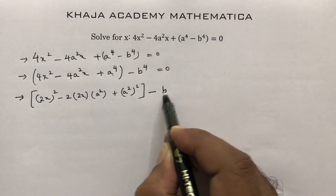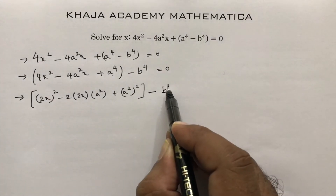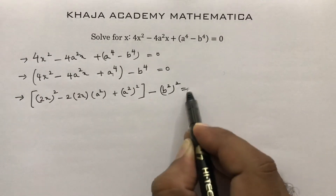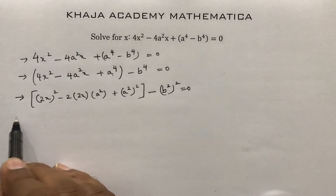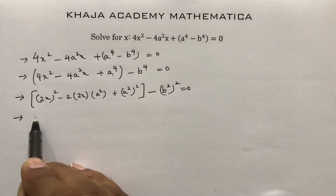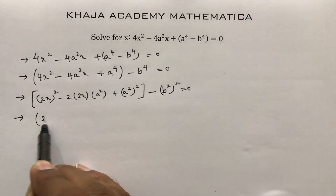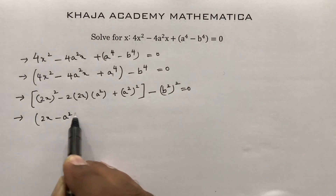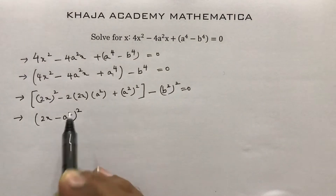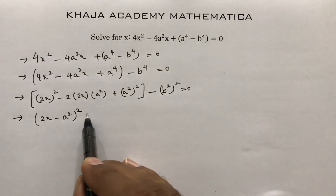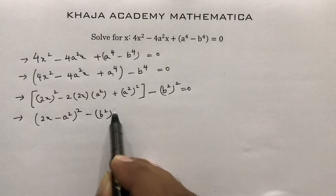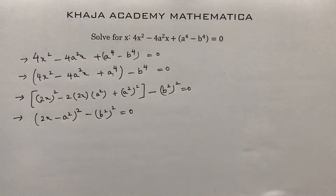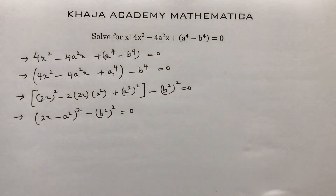And b⁴ can be written as (b²)². So the expression becomes (2x - a²)² - (b²)² = 0.